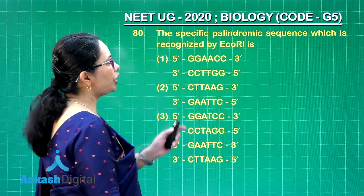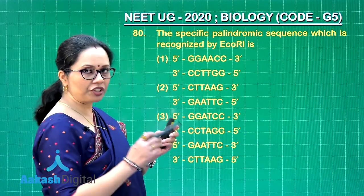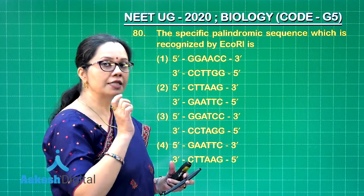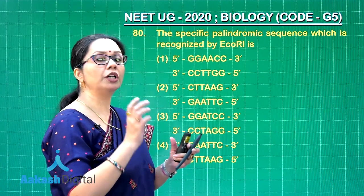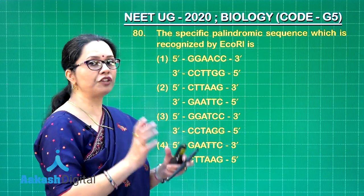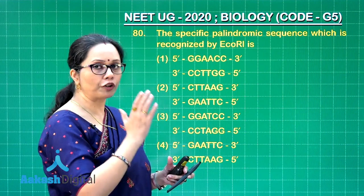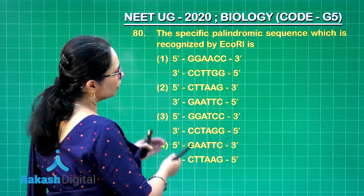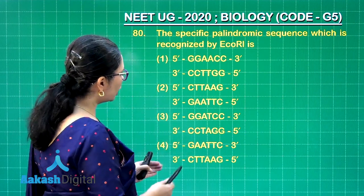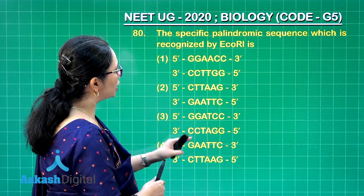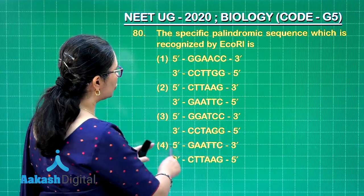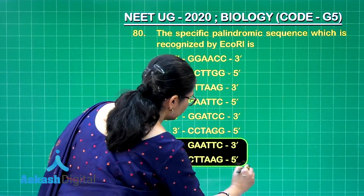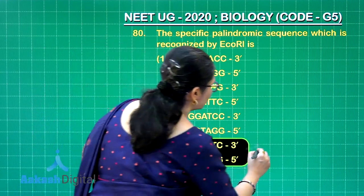Question 80: the specific palindromic sequence recognized by ECO R1, a restriction endonuclease. Restriction endonucleases recognize a 4 to 8 nucleotide long palindromic sequence and cut the phosphodiester bond on both strands. For ECO R1, reading from the 5 prime end the sequence is G-A-A-T-T-C. The correct answer is the fourth choice.